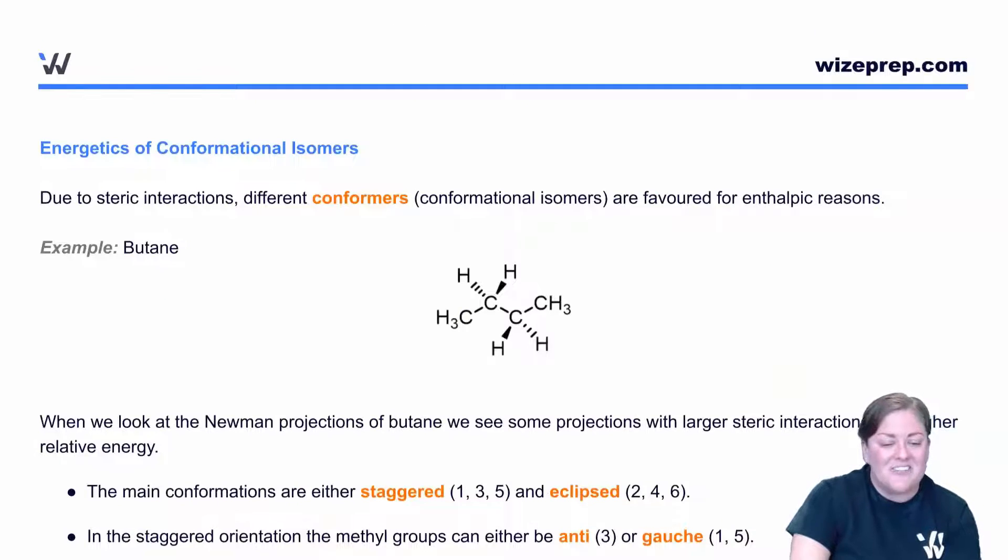So let's talk about the energetics of conformational isomers. So here we're talking about relative energetics. There's not going to be a calculation that you need to do here. There's not going to be numbers you need to have memorized. You're just going to need to understand a couple key points. We're going to look at butane as an example. Butane is a four-carbon chain.